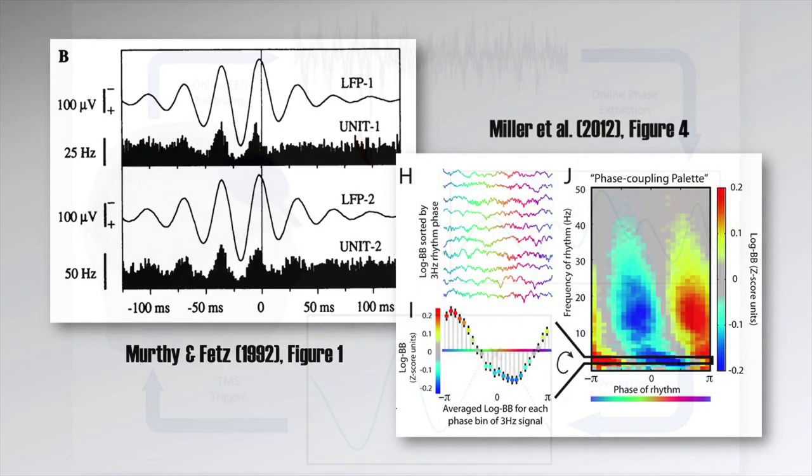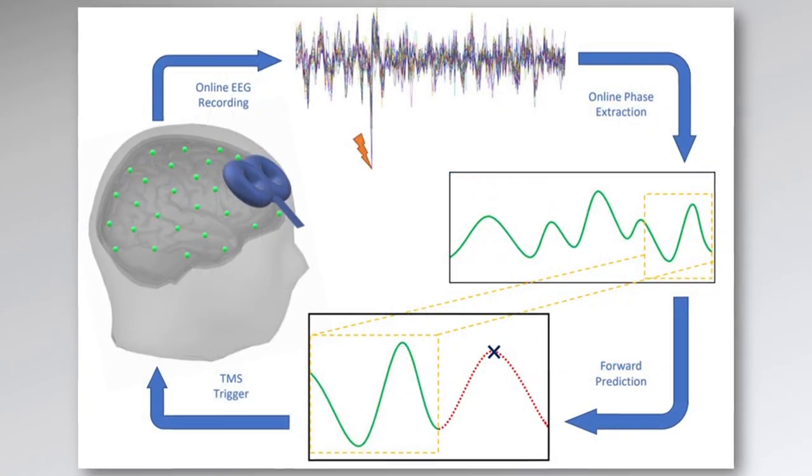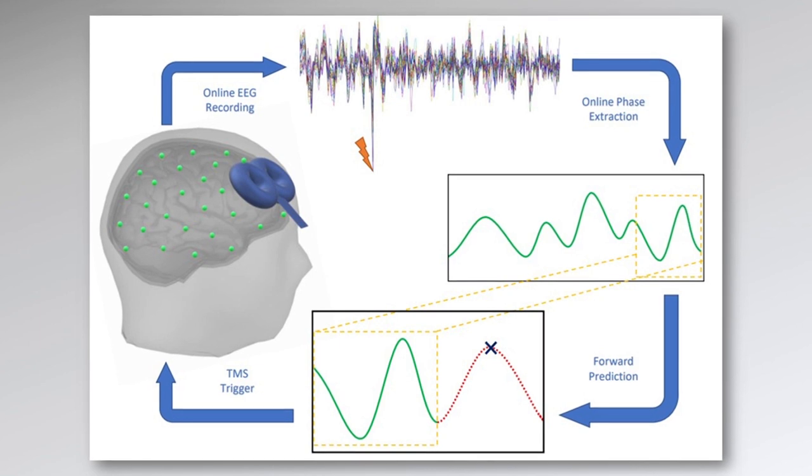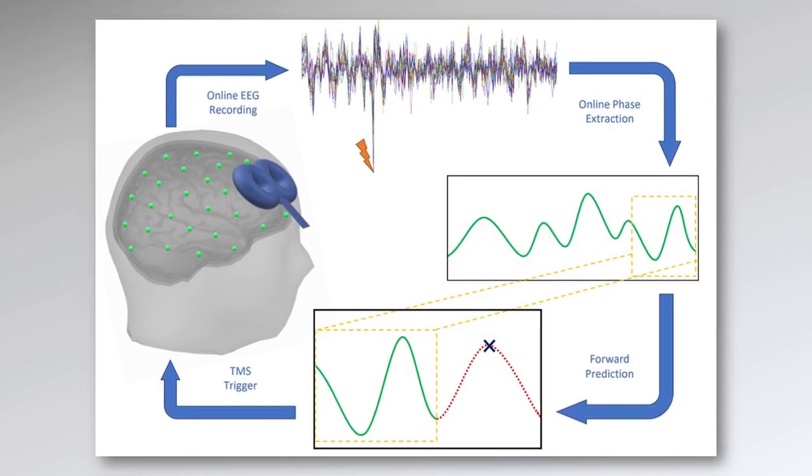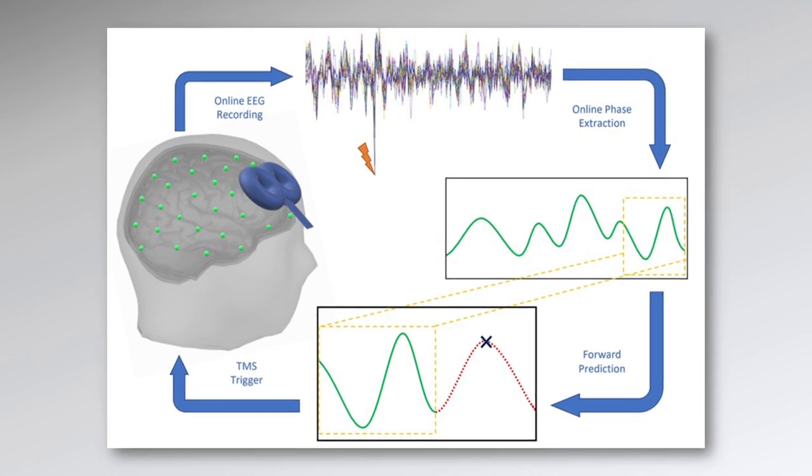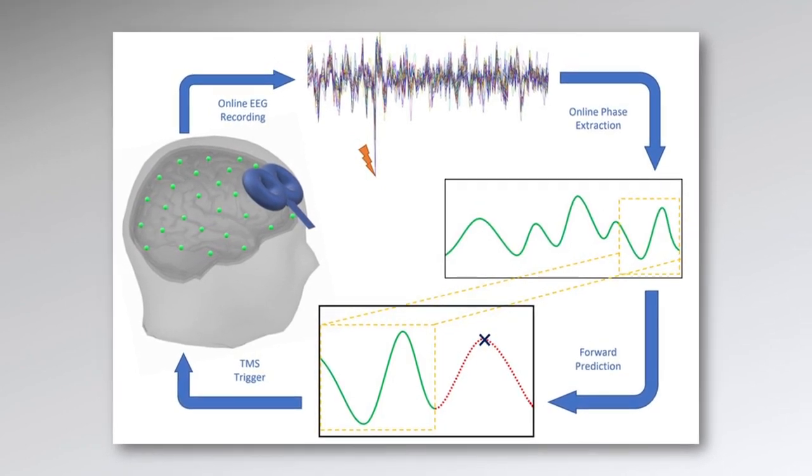My colleagues and I from the University of Minnesota developed an algorithm to analyze oscillation phase of motor cortical mu and beta rhythms in real time and simultaneously probe motor cortex excitability by using transcranial magnetic stimulation, or TMS.